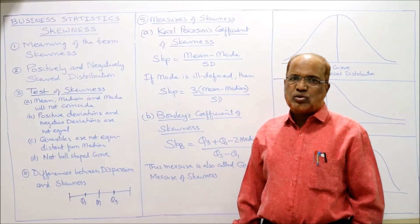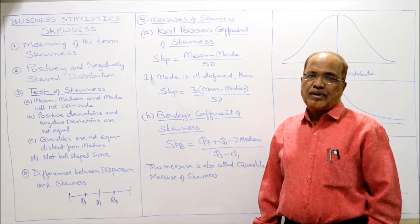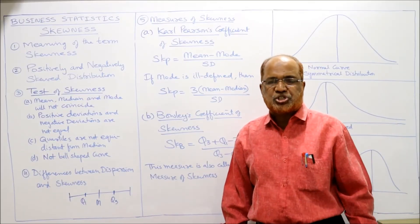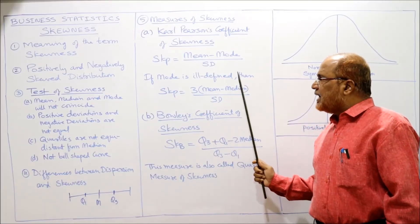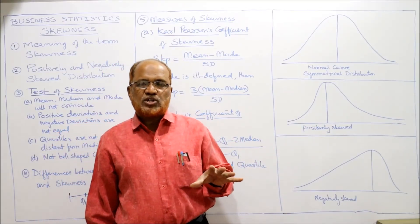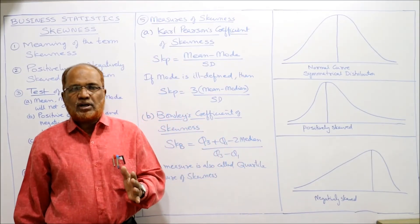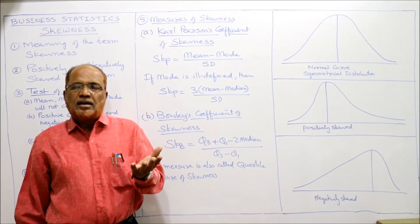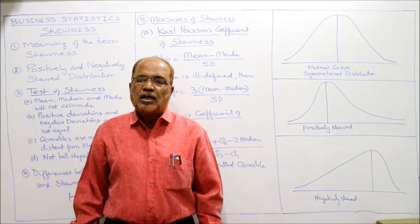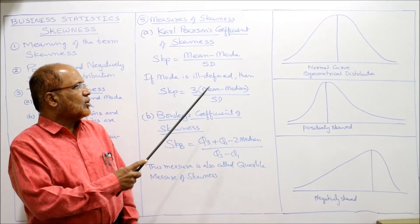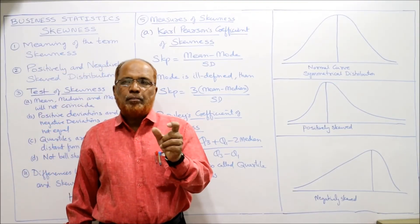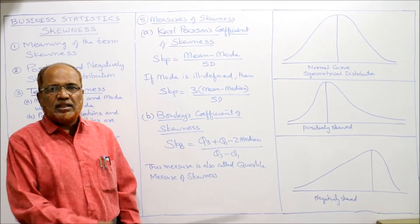SKP can be positive, negative, or zero. If positive, the distribution is positively skewed; if negative, it is negatively skewed; if zero, it is unskewed — meaning the data is symmetrical. If the mode is ill-defined (as in bimodal or multimodal series), we apply the alternative formula: SKP = 3 × (Mean − Median) / Standard Deviation. We use this alternative when mode cannot be directly calculated.